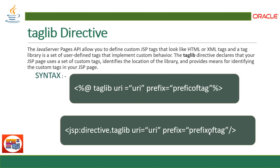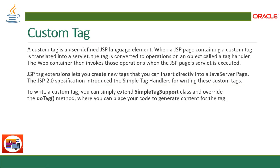The tag library lets you customize your tag library and provide a tag descriptor to the container to define your own tag and use it anywhere in the application. The declaration syntax is: percentage at-rate taglib, with 'uri' as a keyword providing the URI, and 'prefix' as your tag prefix. In XML format: jsp:directive.taglib uri='uri' prefix='tagname'. We'll see this more clearly in the demonstration.